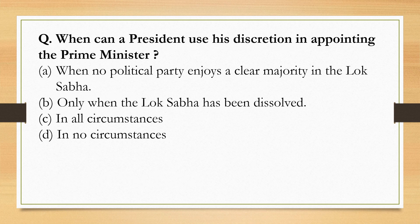When can a President use his discretion in appointing the Prime Minister? When no political party enjoys a clear majority in the Lok Sabha, the President of India can use his discretion in appointing the Prime Minister. Option A is the correct option.